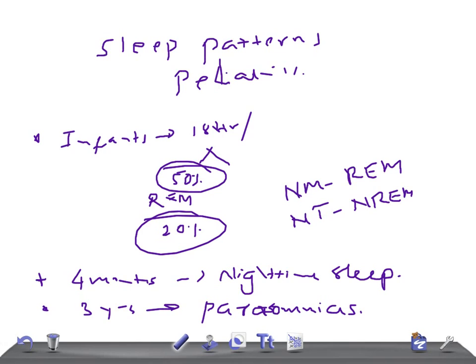Sleep walking, also known as somnambulism, occurs in NREM stage. It's most common around four to eight years of age.